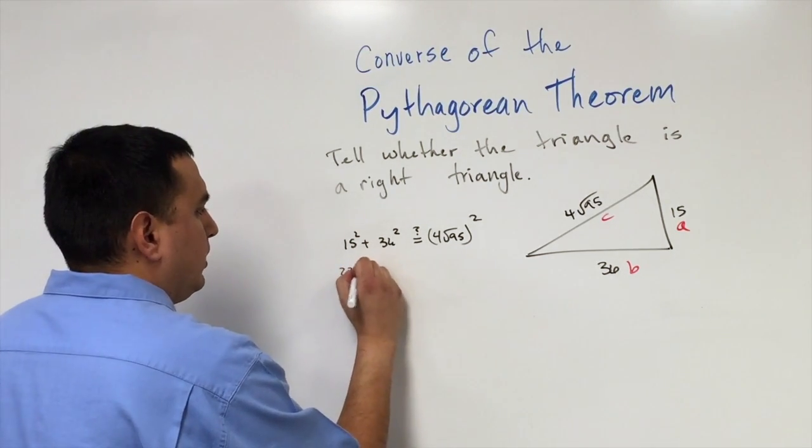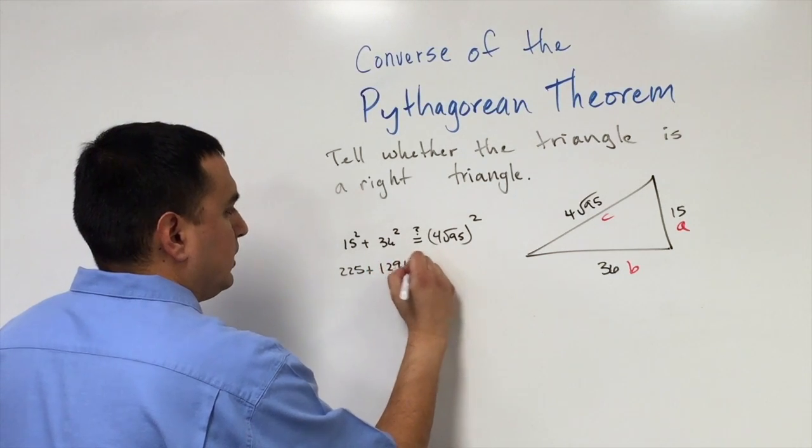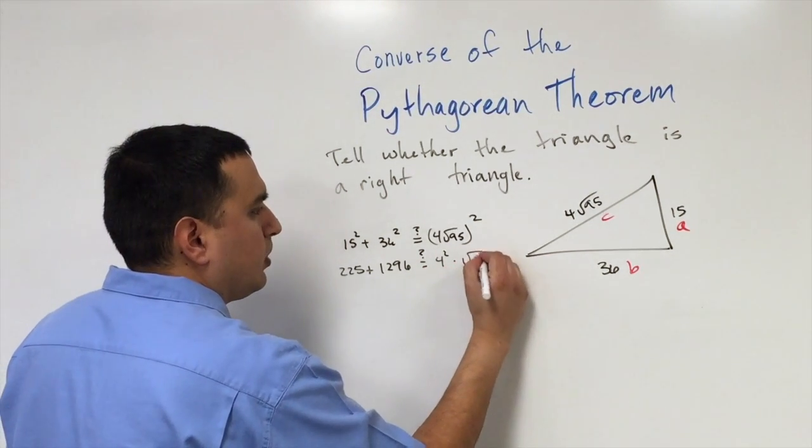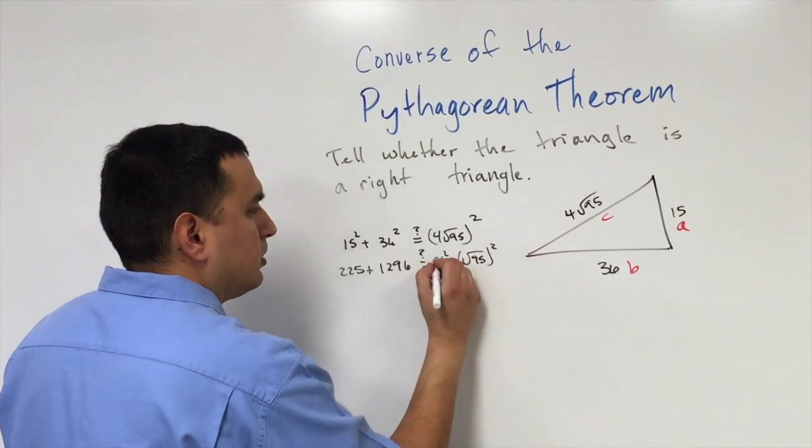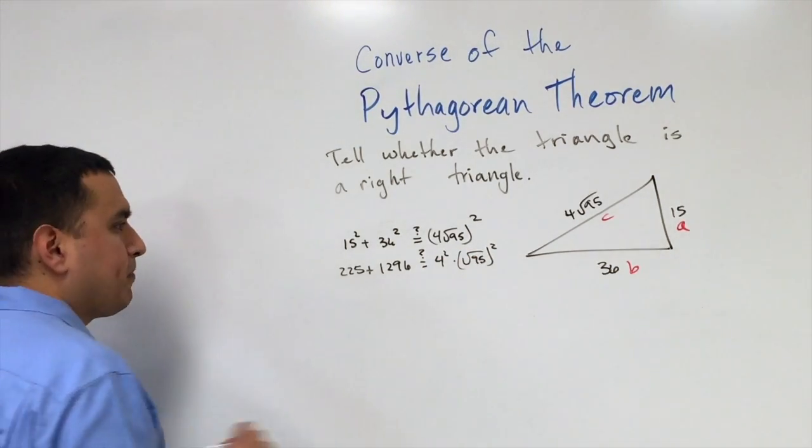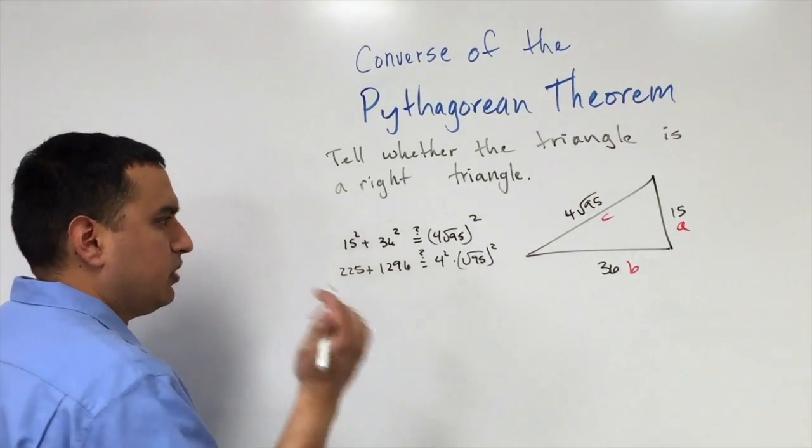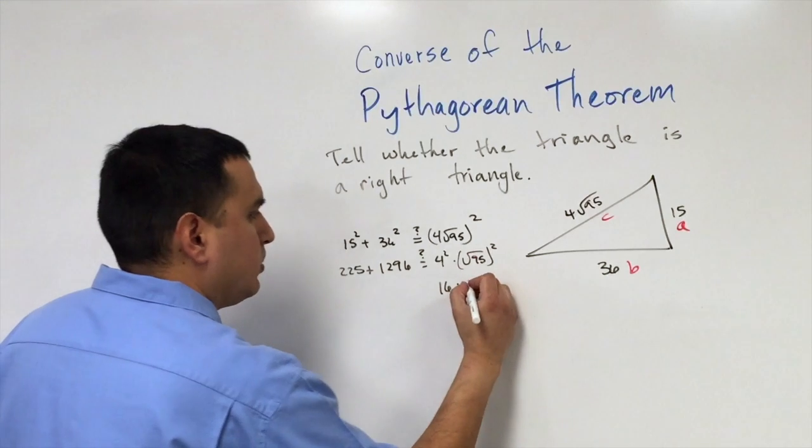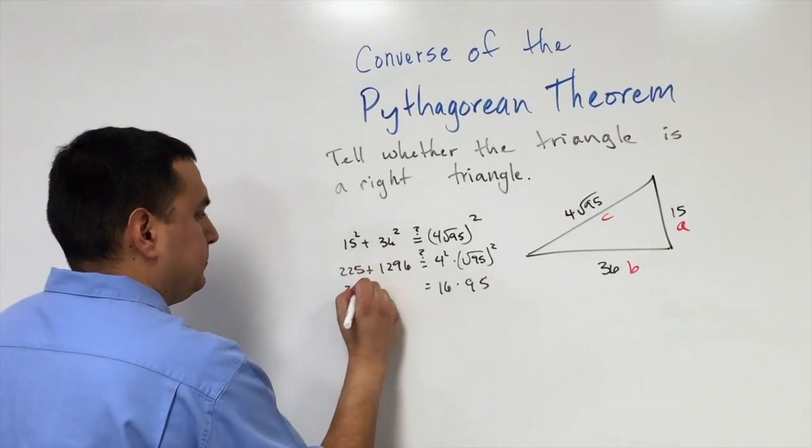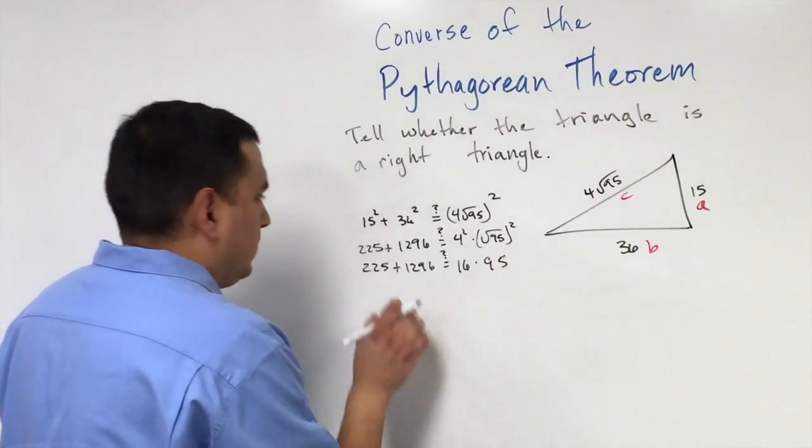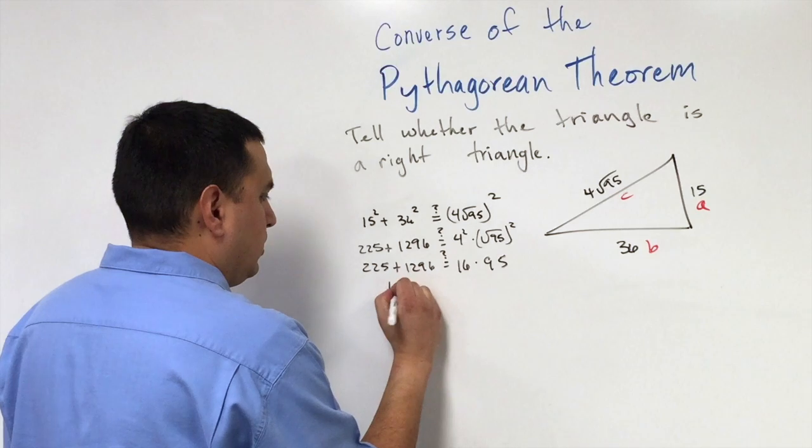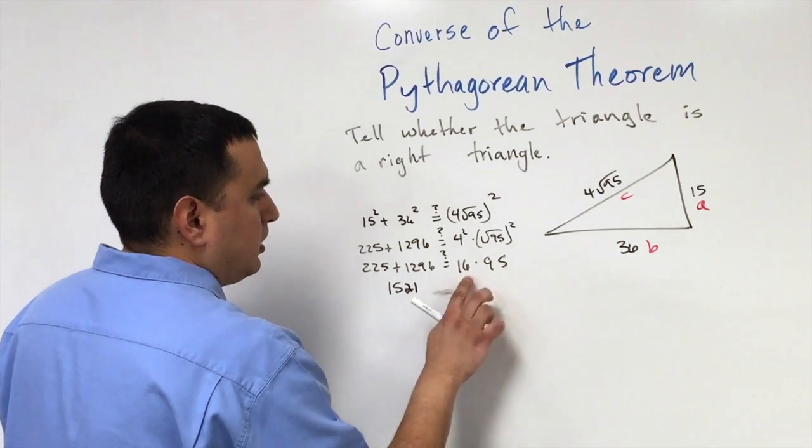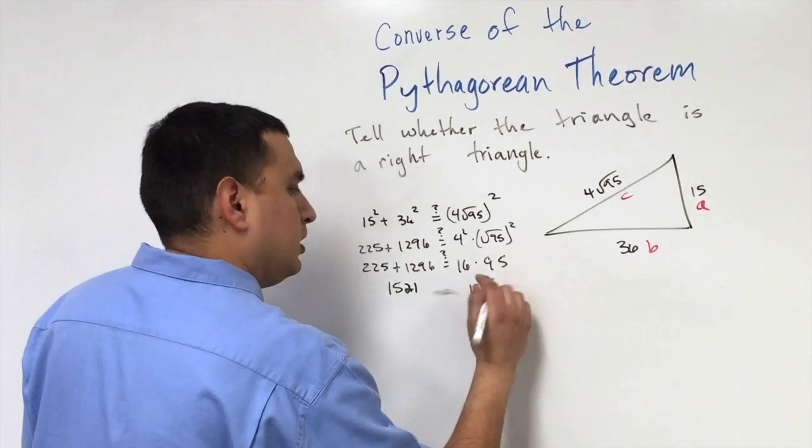15 squared is going to be 225. 36 squared is 1296. For this one, I'm going to separate it out. I'm going to do 4 squared times the square root of 95 squared. I separated that out so the math will be easier in my head. 4 squared is 16 times the square root of 95 squared. And remember that they cancel, so that's just 95. 225 plus 1296 comes out to be 1521. And 16 times 95 comes out to be 1520.